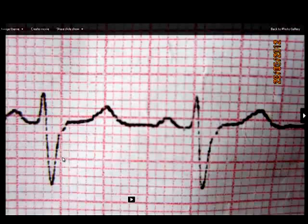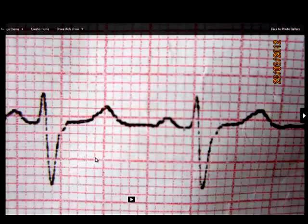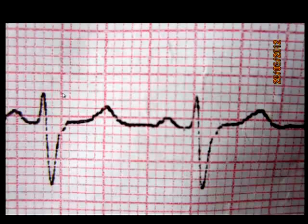So, one large box will be translated into 200 ms in time, and for voltage, it will be 0.05 mV. Two large boxes get translated into 1 mV.